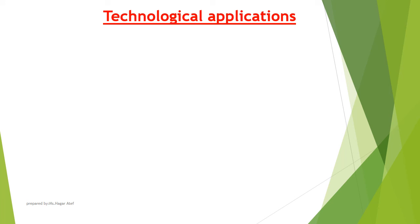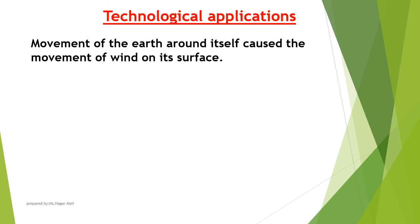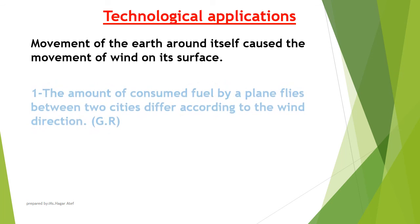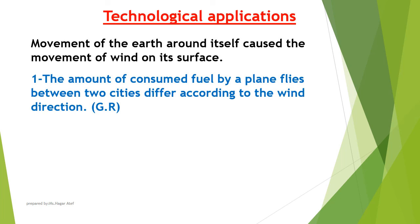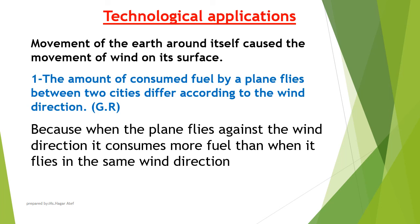Technological applications. Movement of the Earth around itself causes the movement of wind on its surface. The amount of consumed fuel by a plane flying between two cities differs according to the wind direction. Why? Because when the plane flies against the wind direction, it consumes more fuel than when it flies in the same wind direction.